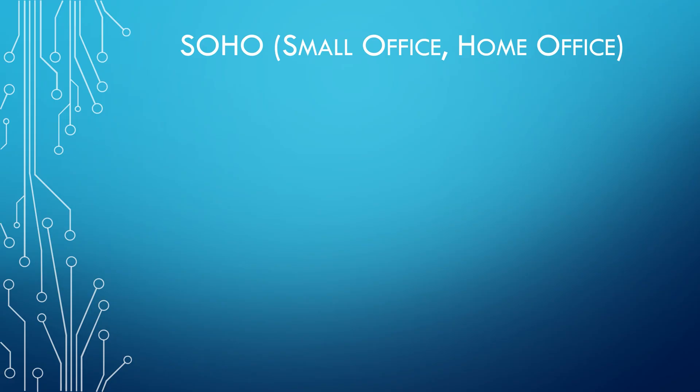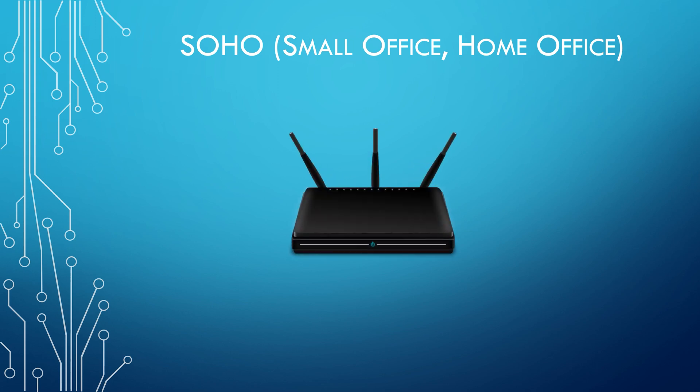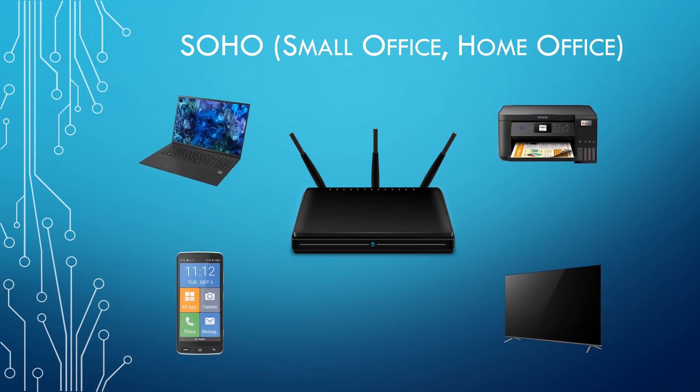These networks usually only have a few devices. This is called a SOHO network, or small office home office. These networks typically have a couple of computers, a printer, a few phones, maybe a tablet. Some devices may be connected to Wi-Fi and others may be cabled directly into a switch.